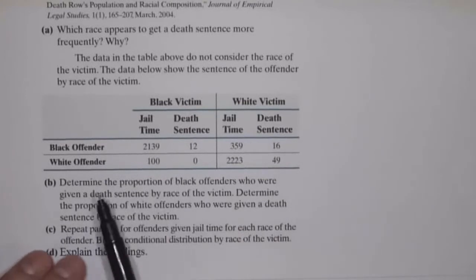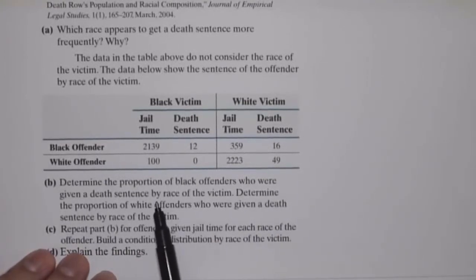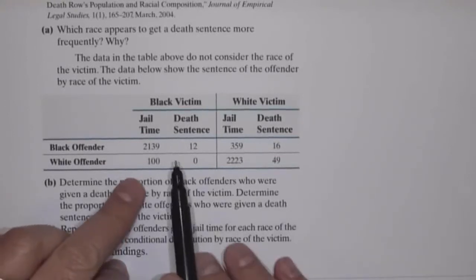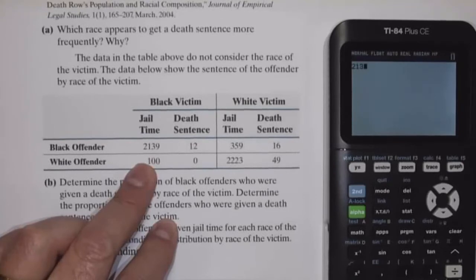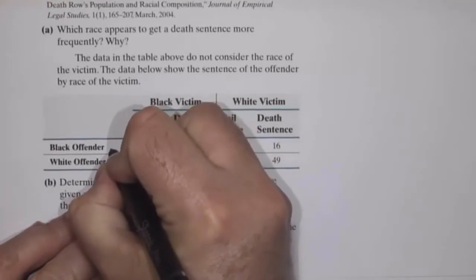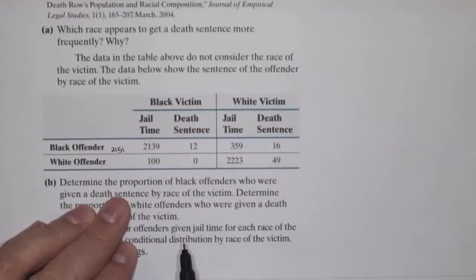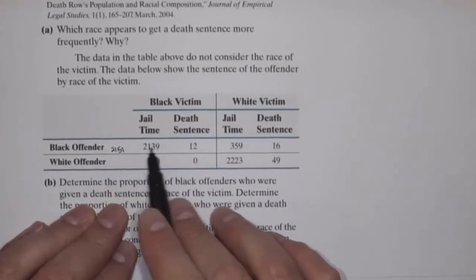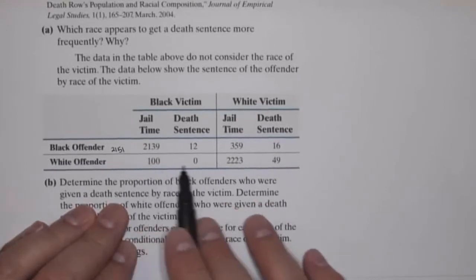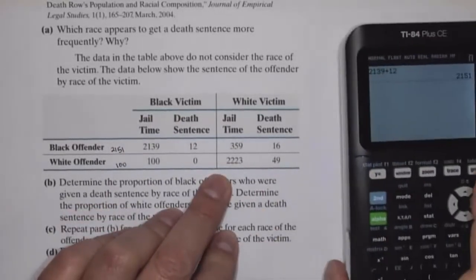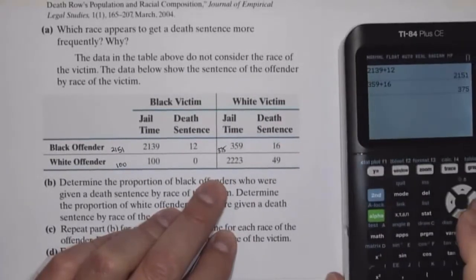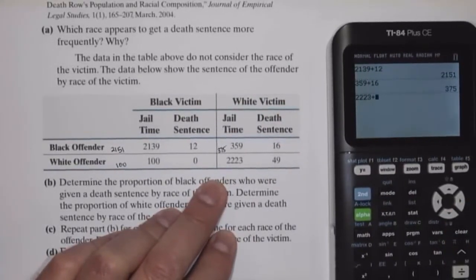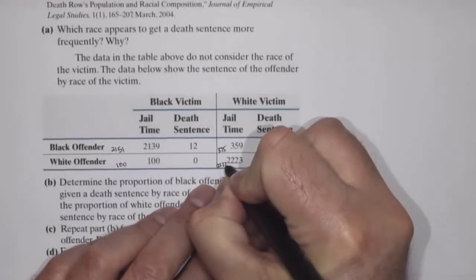Question B asks us to determine the proportion of black and white offenders given the death sentence by race of the victim. To figure out the proportions, we need the totals first. For black victims: 2,139 plus 12 gives 2,151 black offenders total, and 100 plus 0 is 100 white offenders total. For white victims: 359 plus 16 is 375 black offenders total, and 2,223 plus 49 is 2,272 white offenders total.